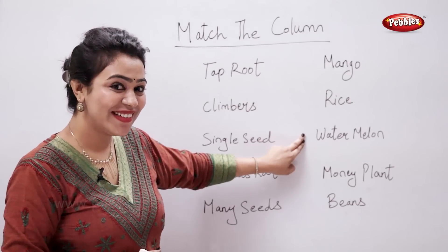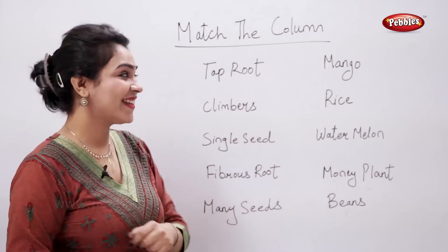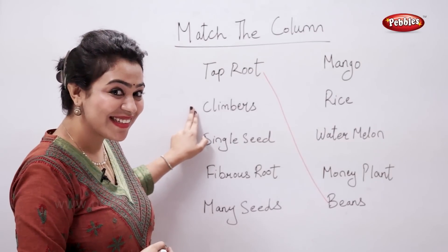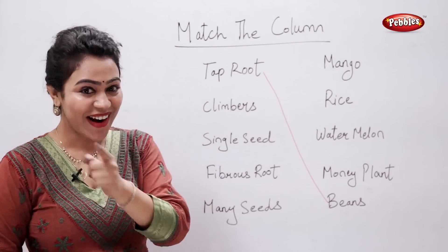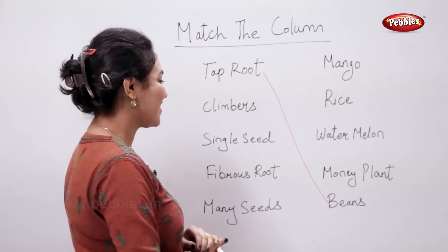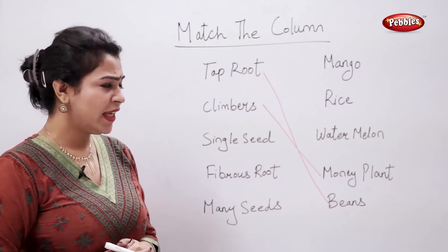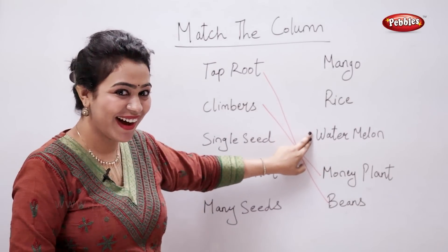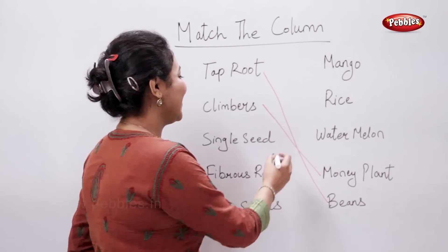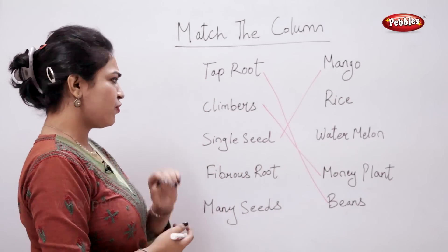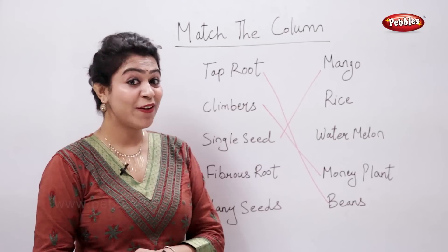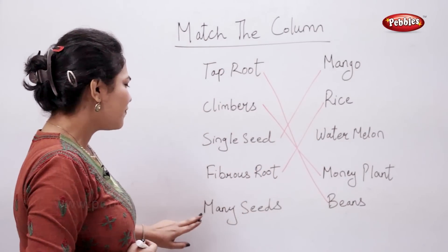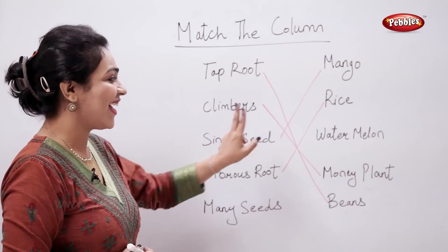An example of a taproot is beans. An example of a climber is the money plant. Which fruit has a single seed? That's a mango. Give me an example of a fibrous root — rice. Which fruit has many seeds? That's a watermelon.